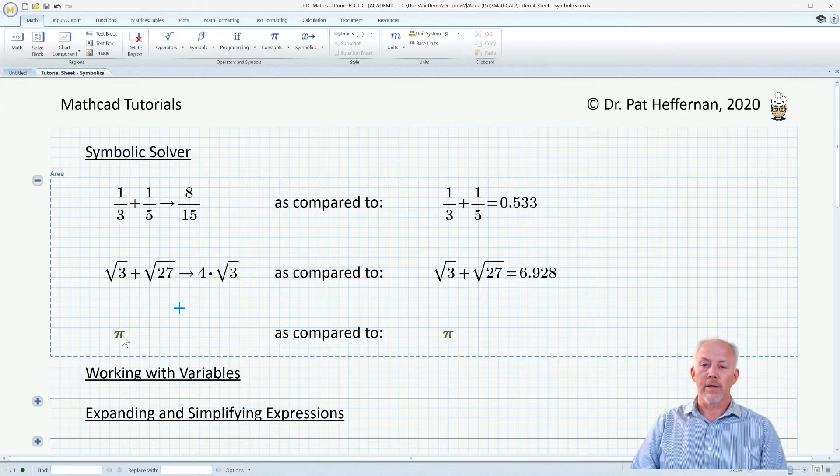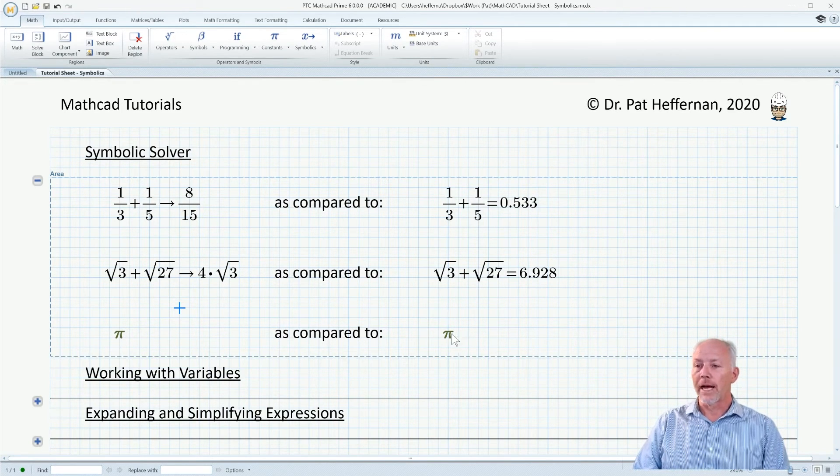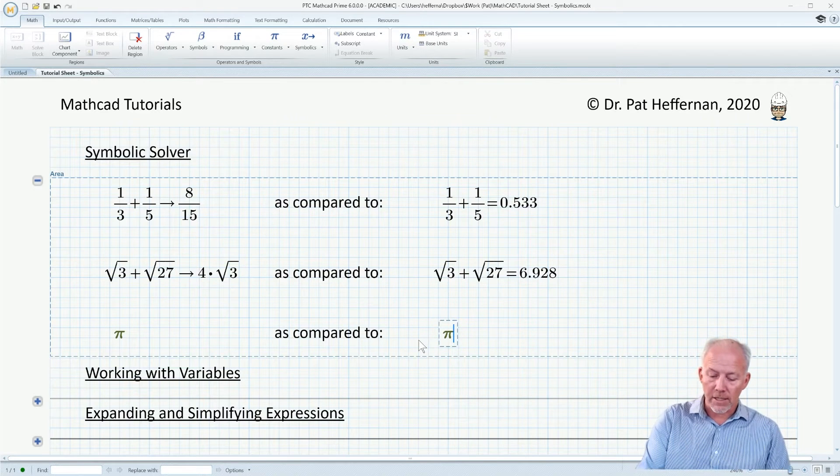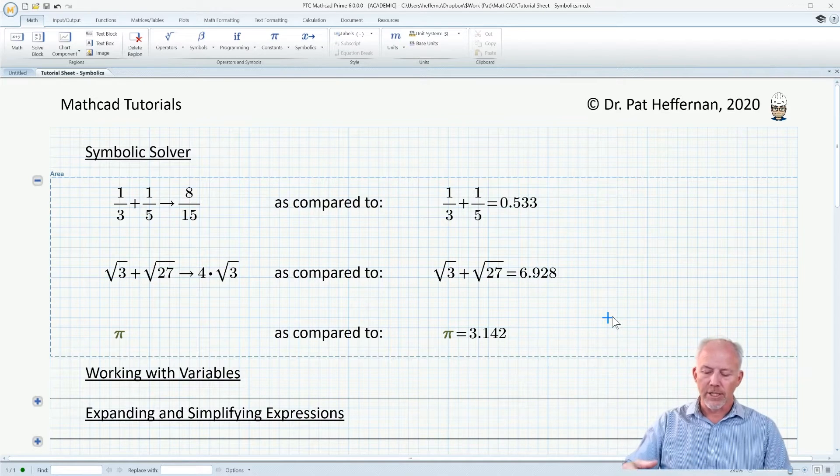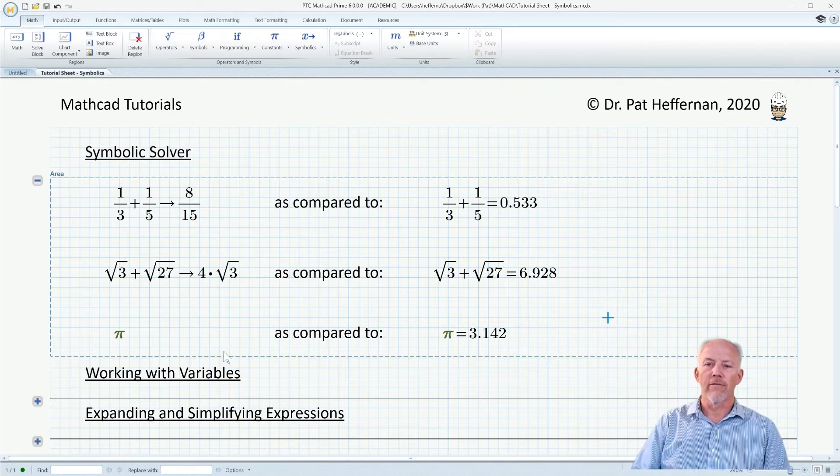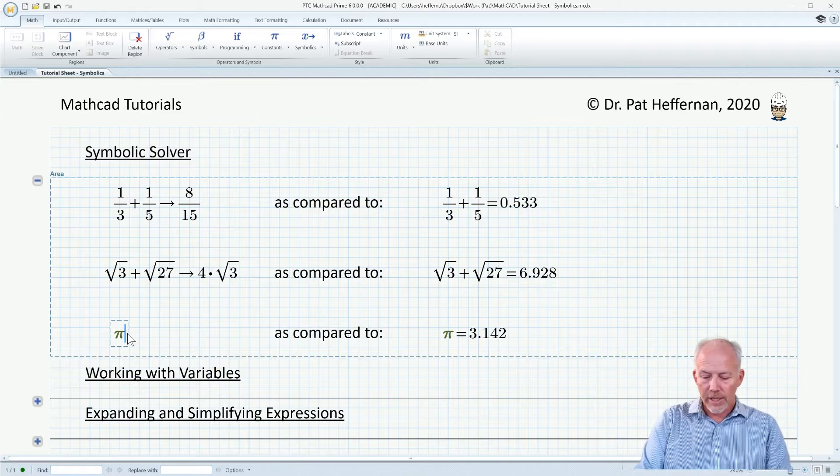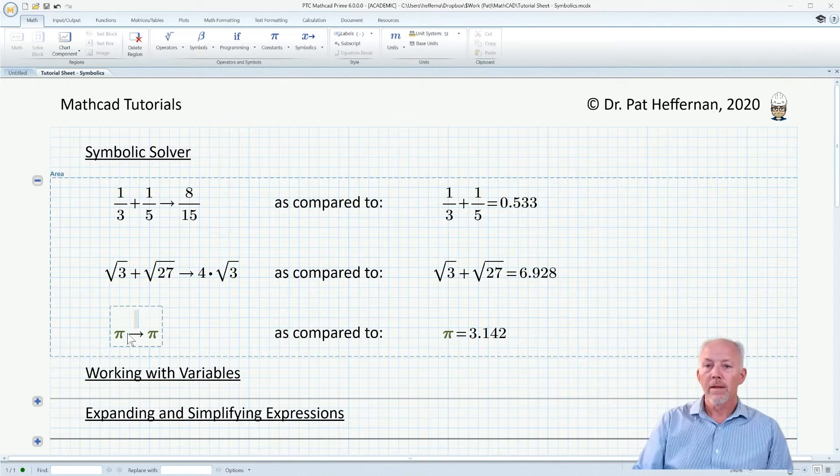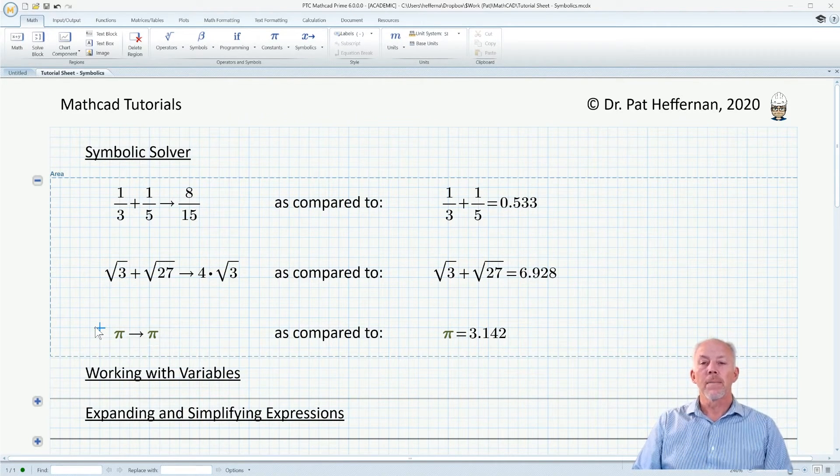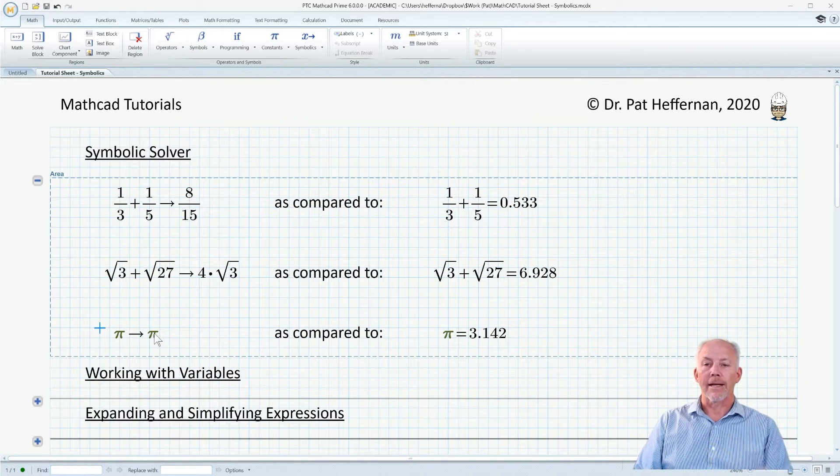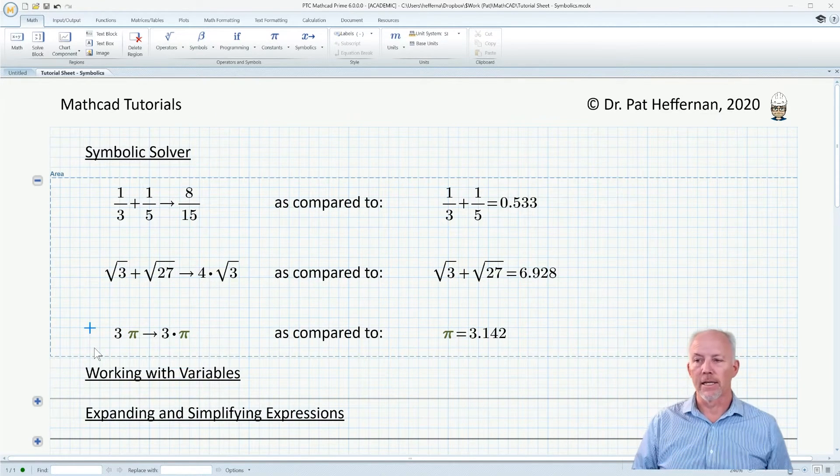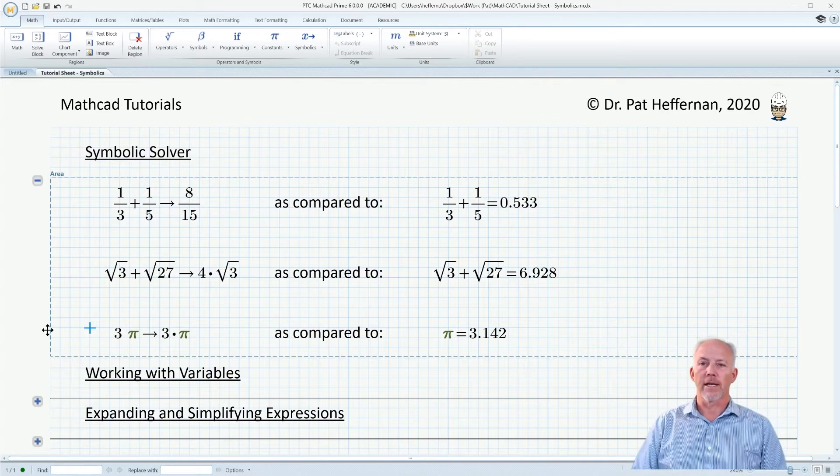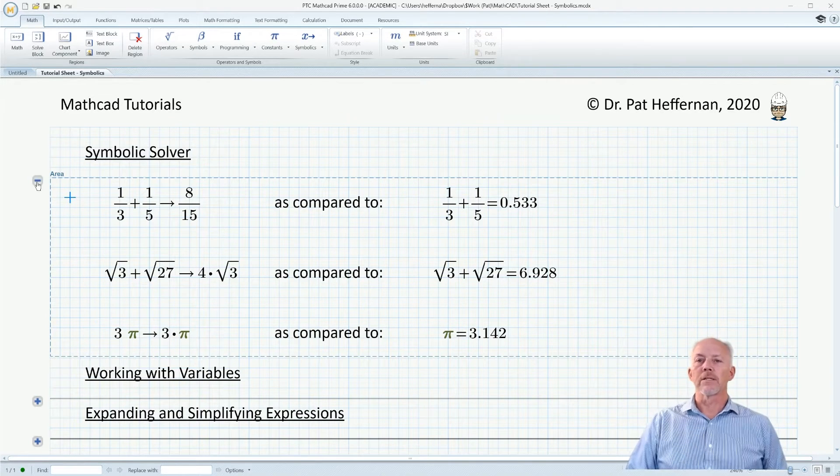When it comes to constants, it does the same thing. If we have pi as a constant, we hit the equal sign, we're going to get some value depending on how many digits you're displaying. But over here, if we engage the symbolic solver, we will get it back as a constant. If we had 3pi, we get 3pi back. It's not going to do the multiplication.